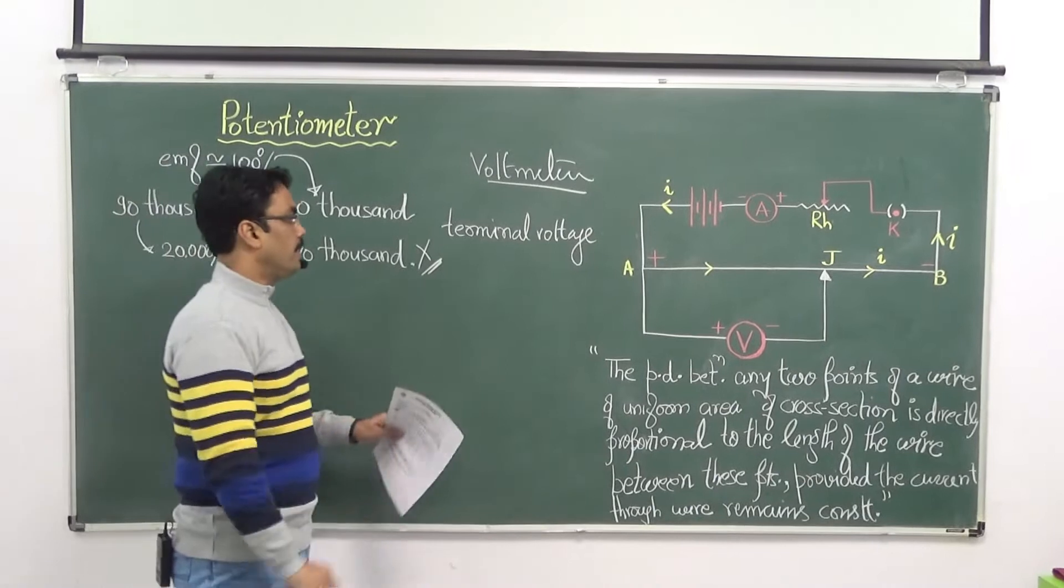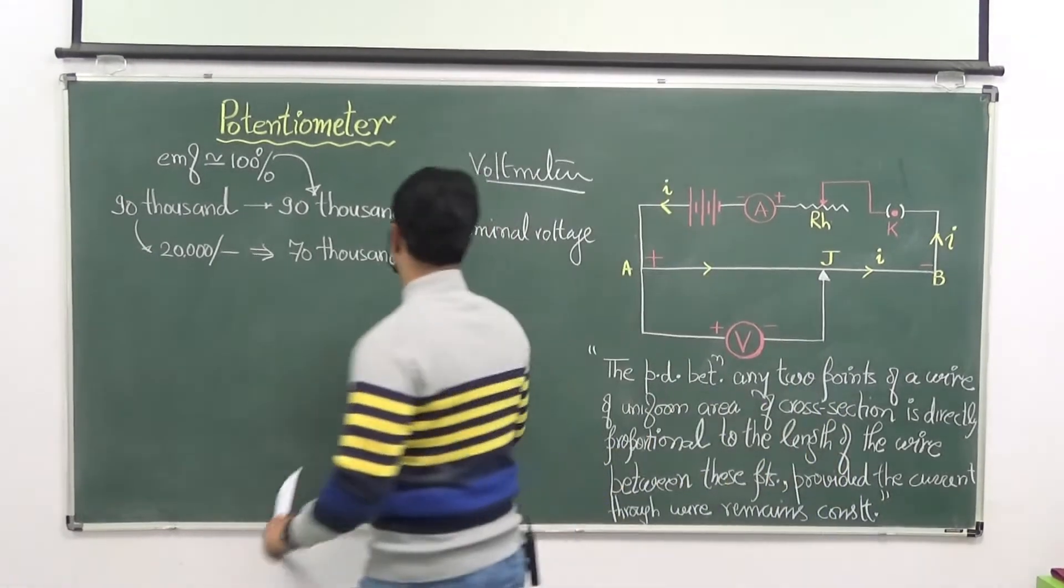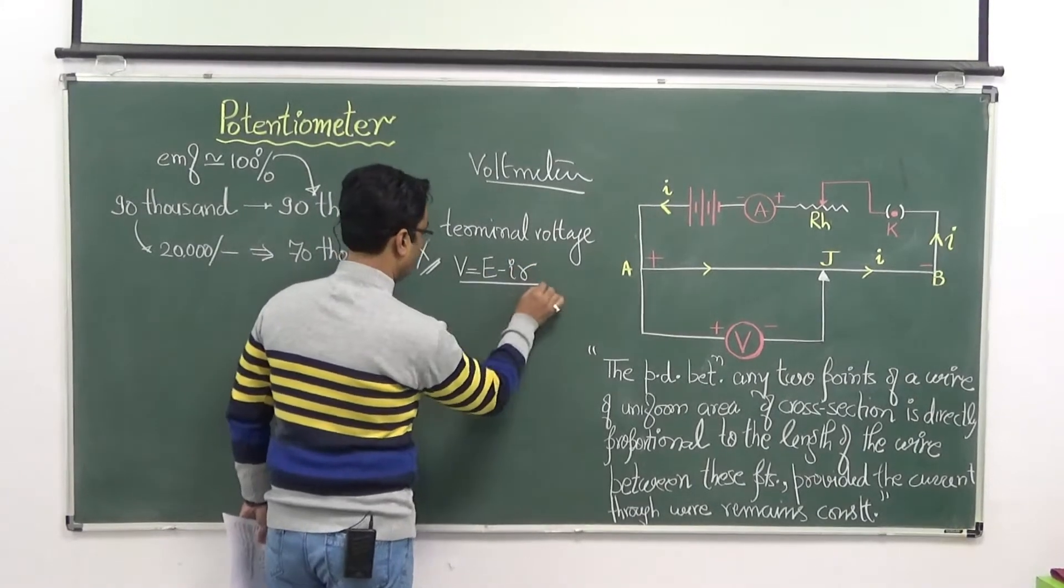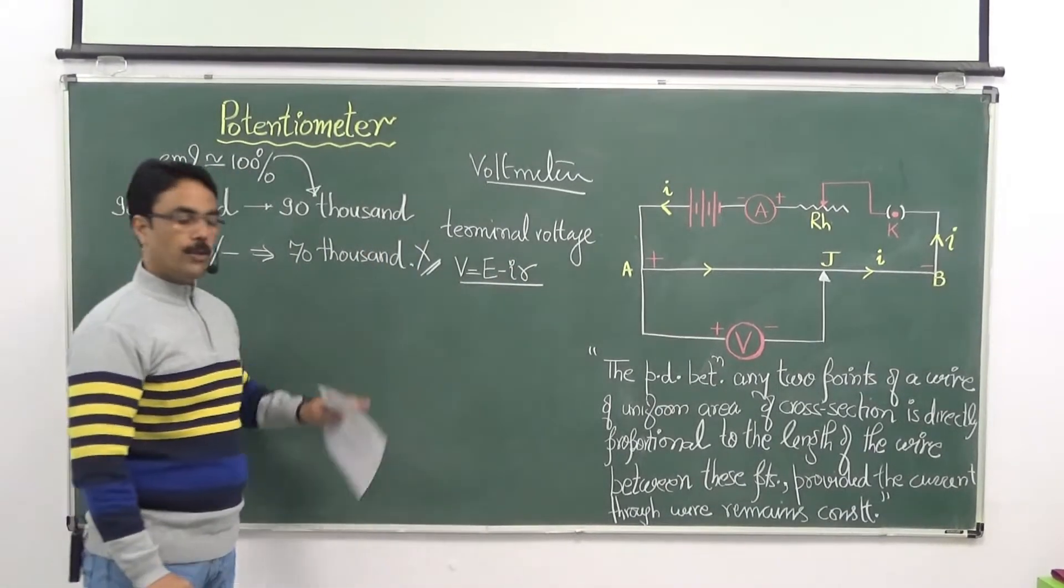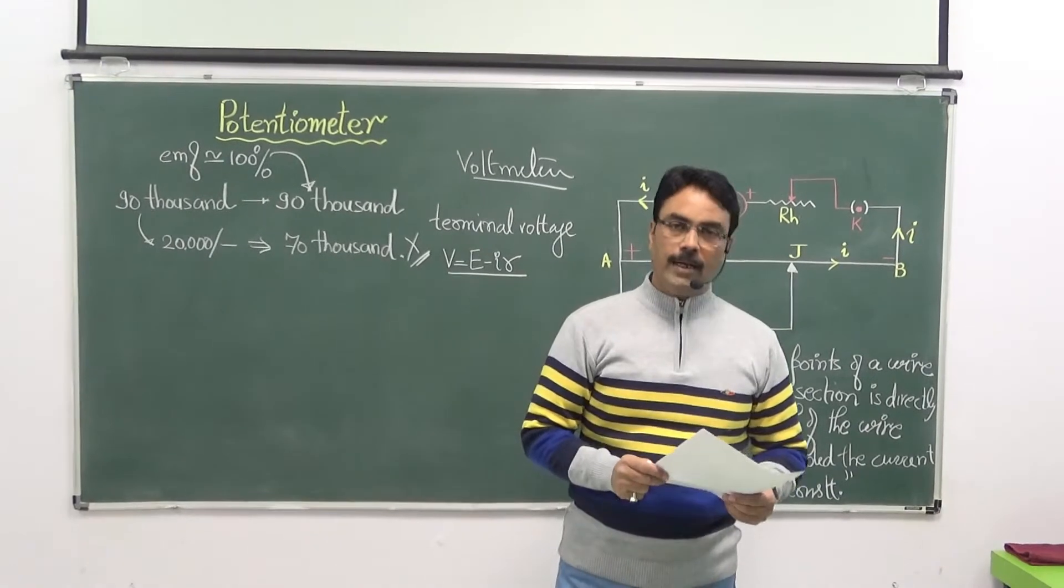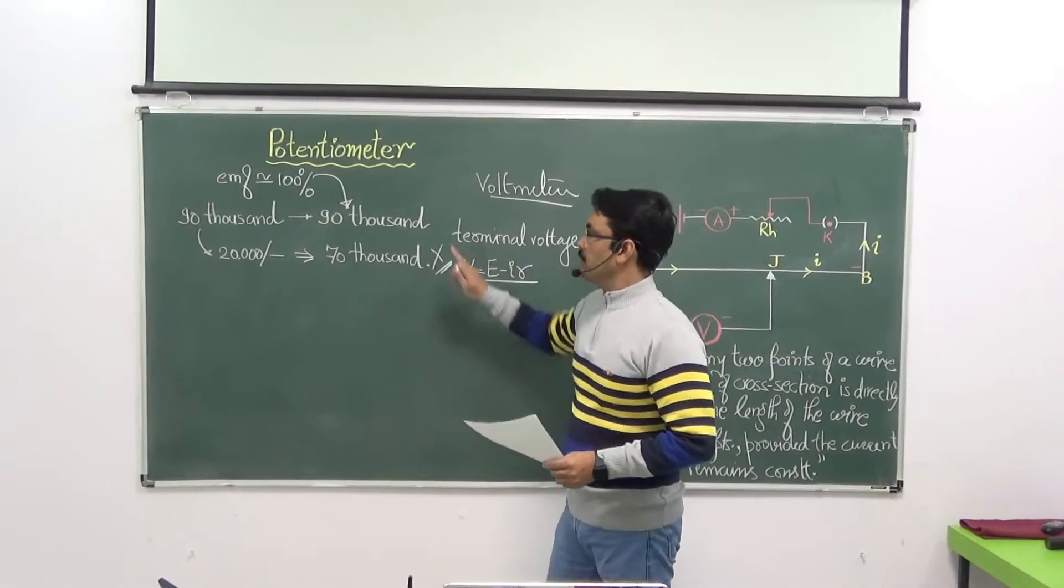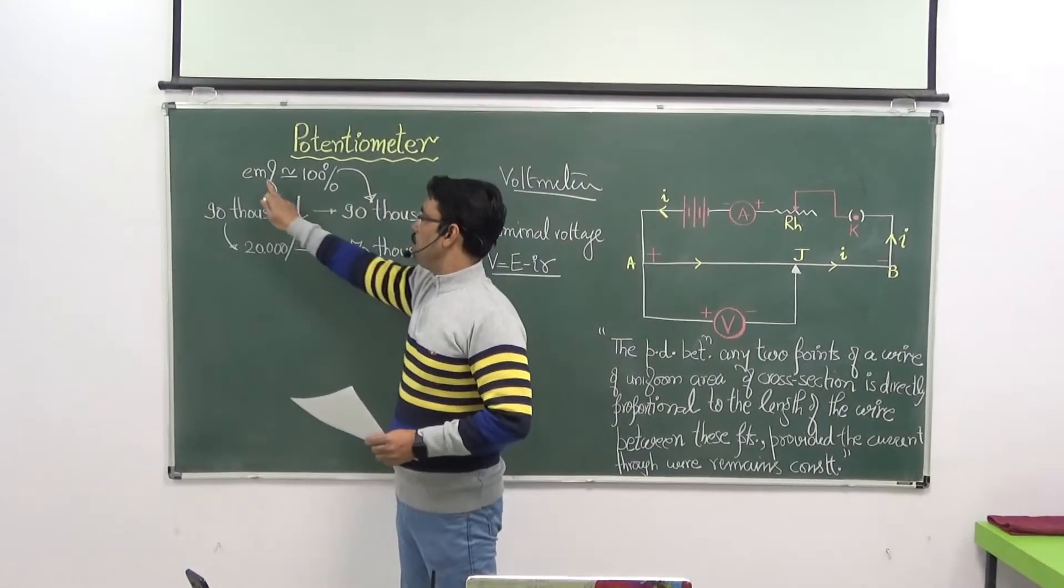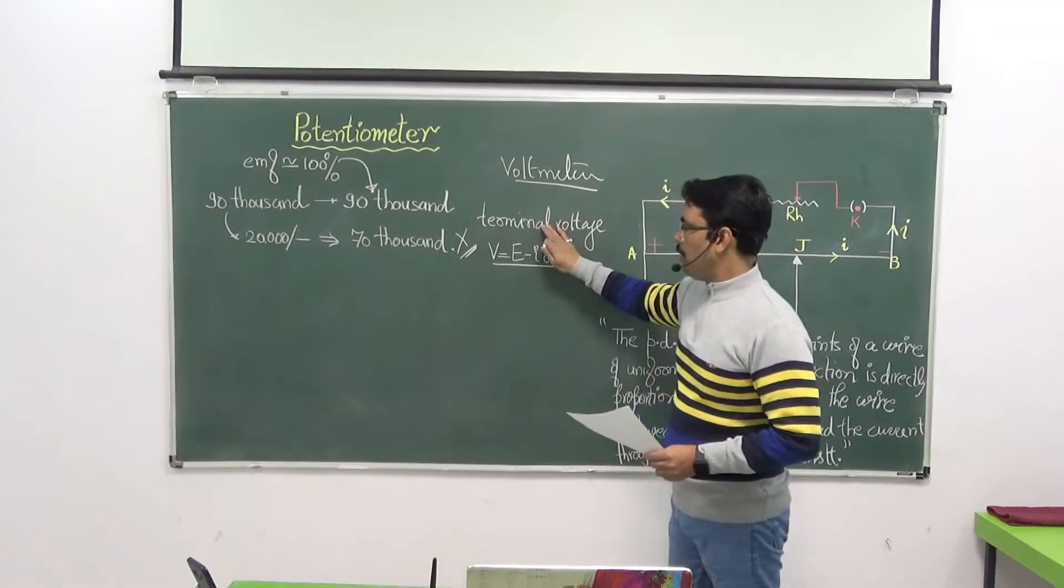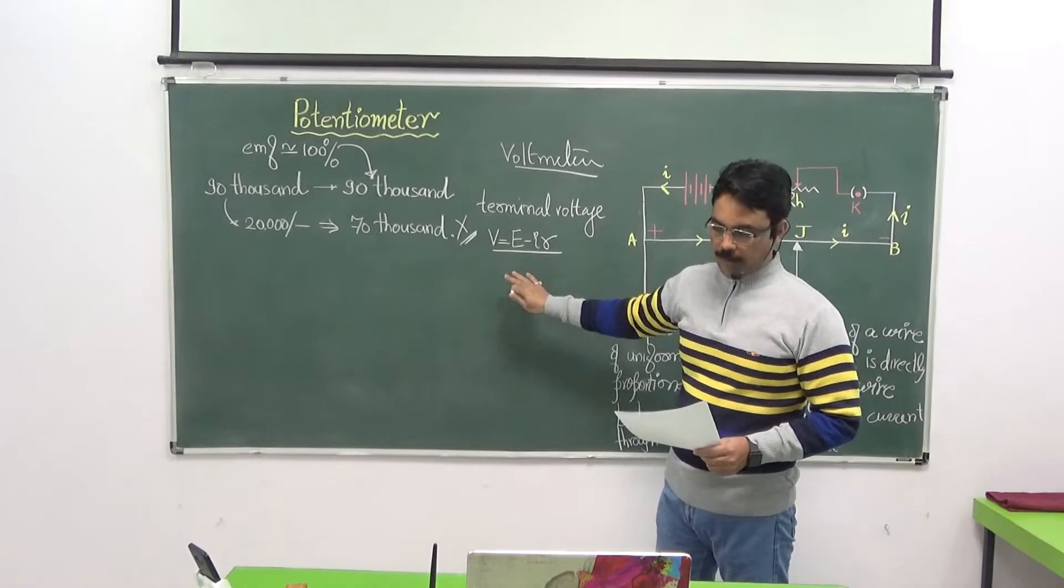And everyone of us are aware ki jo terminal voltage ki value hogi, vo cell ke EMF se kam hoti hai, because we have done this formula. So I am pretty sure ki agar aapse viva mein ya exam mein ye question poocha jata hai ki why do we prefer potentiometer over the voltmeter, so reason is very clear. Potentiometer is having capacity to tell you the 100% true value of the EMF of cell, whereas voltmeter hame terminal voltage dega, jo ki value EMF se kam hoti hai.